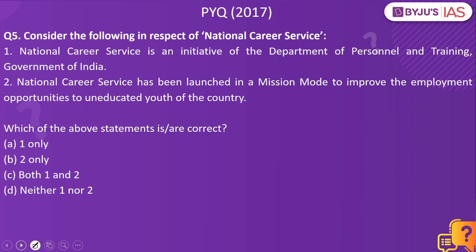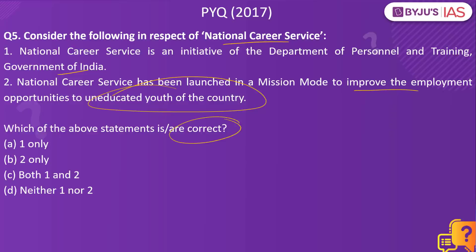Now let's look into the next practice question. Consider the following in respect of National Career Service. National Career Service is an initiative of the Department of Personnel and Training, Government of India. National Career Service has been launched in a mission mode to improve the employment opportunities to uneducated youth of the country. Which of the above statements is or are correct? The answer is neither one nor two. This is a previous year question from 2017. The first option is wrong because this is an initiative of the Ministry of Labour and Employment, not the Department of Personnel. The second part about uneducated youth is also wrong — it provides employment opportunities for degree holders and diploma holders, not uneducated youth.